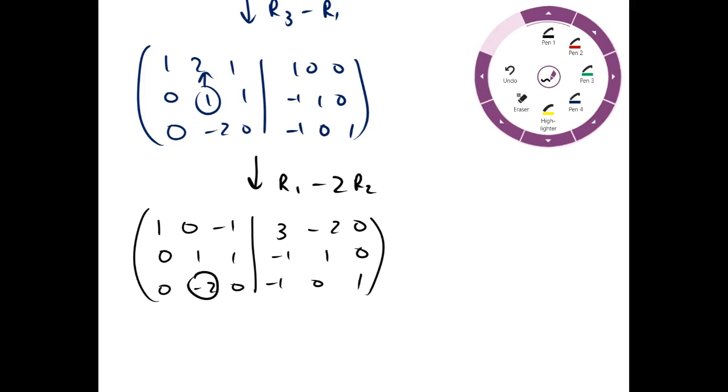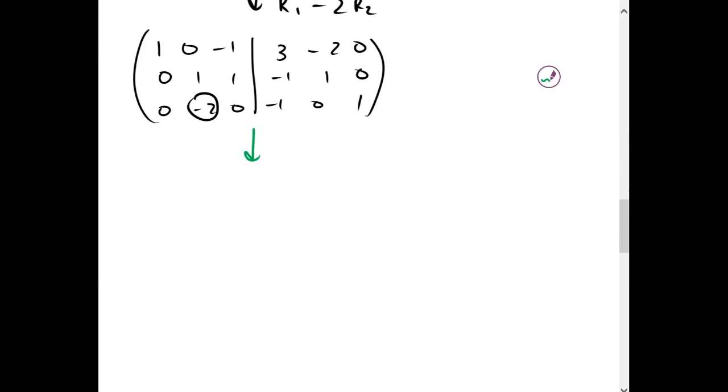And now we want 0 here. So we're gonna take R3 and add 2 of R2 to it. That's gonna give us 0, 0, 2, negative 3, 2, and 1.